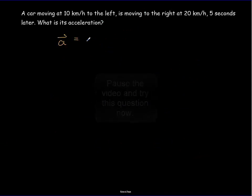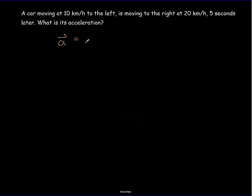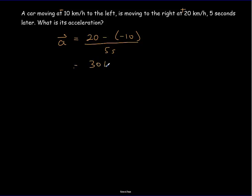The acceleration equals the final velocity — positive 20, since it's moving to the right — minus the initial velocity, which is negative because it was moving to the left. So we have 20 minus −10 over a time period of five seconds. Our change in velocity is 30 km/h over five seconds, giving an acceleration of 6 km/h every second.